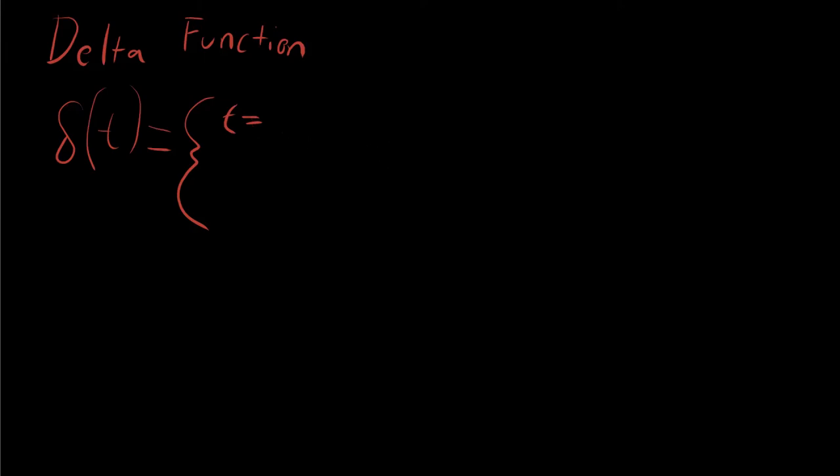Actually, I'm doing this backwards, right? Is zero for t not equal to zero. And when t is equal to zero, it's something like infinity.